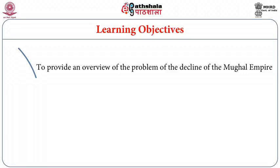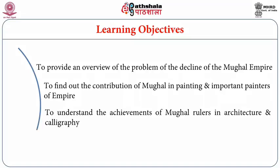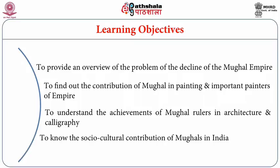In the previous module, we discussed Aurangzeb, his contributions, achievements, especially his religious policy and his policy towards Deccan and the Northwest Frontier Province. This module is fully dedicated to the decline of the Mughal Empire and the contributions of the six emperors. Our objectives are: to provide an overview of the decline, to examine Mughal contributions in painting, architecture, calligraphy, and socio-cultural life.